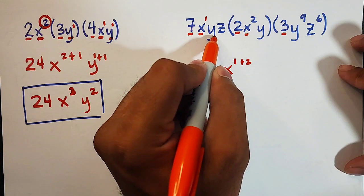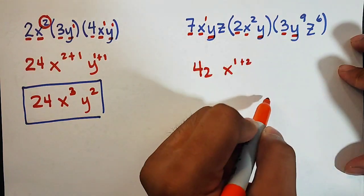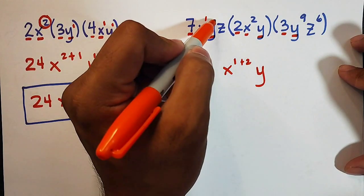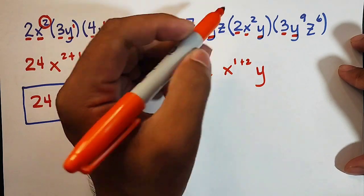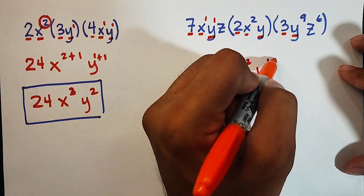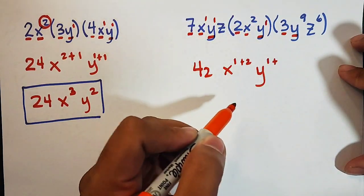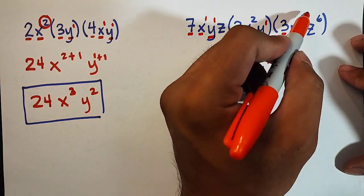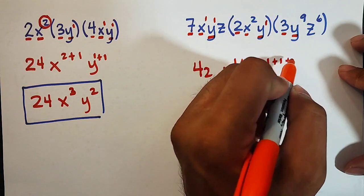For the variable y, let's copy the variable y. We have y. We have here an exponent of 1. This is 1 plus here another exponent of 1. And here, the exponent is 9. So this is plus 9.